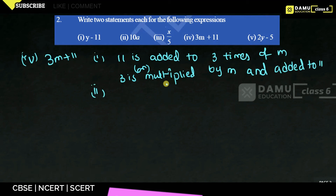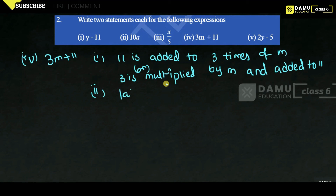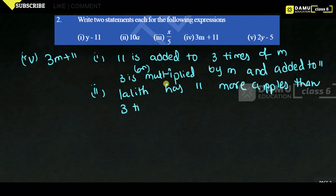A word-problem statement for 3m plus 11: 'Lalith has 11 more apples than 3 times what Ritik has.' Here, Ritik has m number of apples.